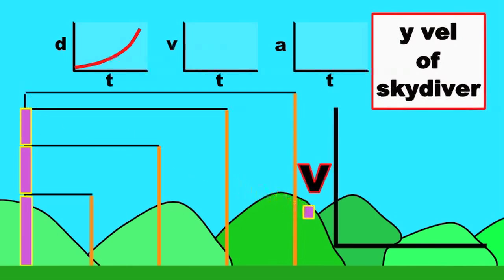We can use the distance traveled during each time interval to construct a velocity versus time graph that has a constant slope.